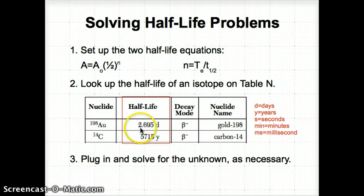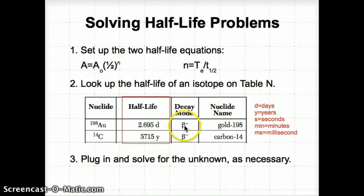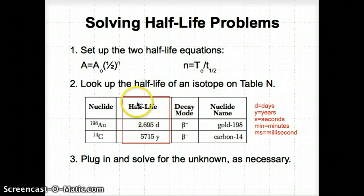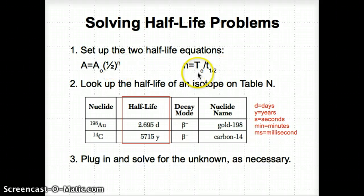Both AU-198 and C-14 have a decay mode of beta minus, or just beta decay. Their nuclide names are gold-198 and carbon-14. These are examples of half-lives you can find in Table N in your reference tables. You then plug the half-life into the equation N = t_elapsed / t_half and solve for whatever the unknown is. You'll be given a bunch of information, but you need to actually solve for one unknown.